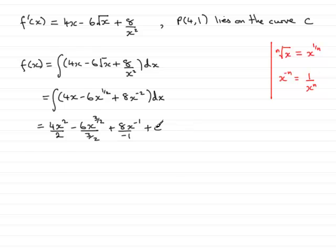Now I need to tidy each of these terms up, so for the first term, 4 divided by 2 is 2, so we've got 2x squared. As for this one, I can times top and bottom of the fraction here by 2, and that will give me 12 over 3, and 12 over 3 is 4, so we can have minus 4x to the power 3 over 2. As for this one, 8 divided by minus 1 is minus 8, and x to the power minus 1 by this rule will be 1 over x to the power 1, or 1 over x, times it with minus 8, and you've got minus 8 over x. And then, don't forget the constant of integration, plus c.